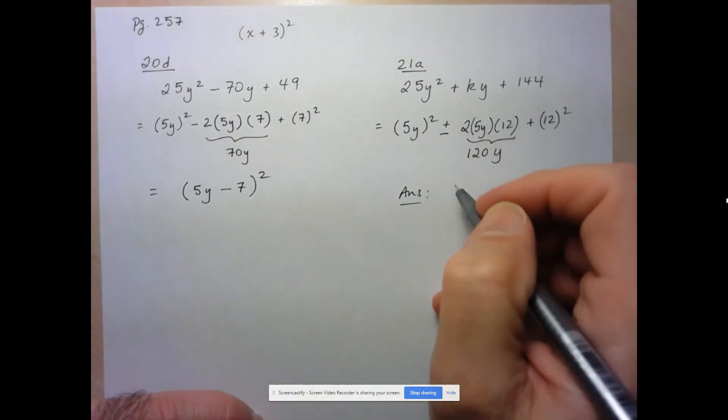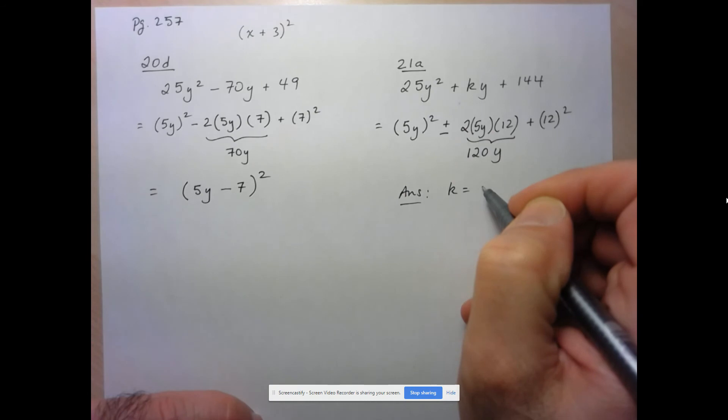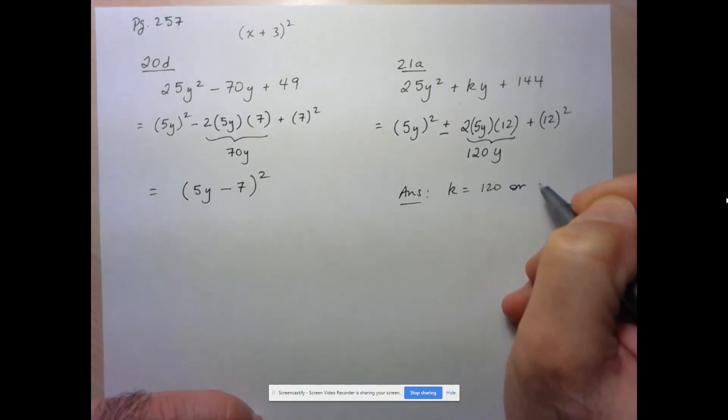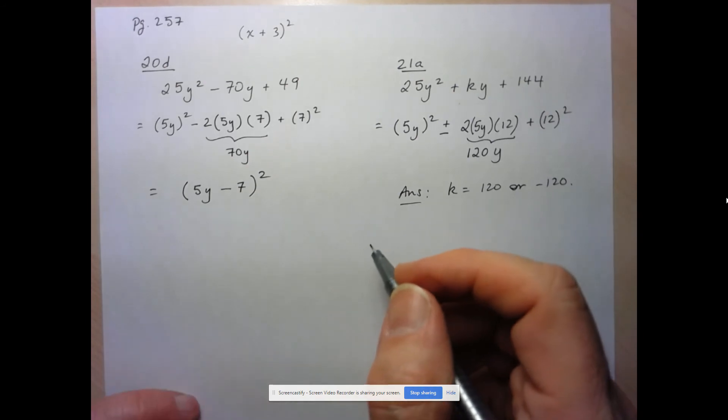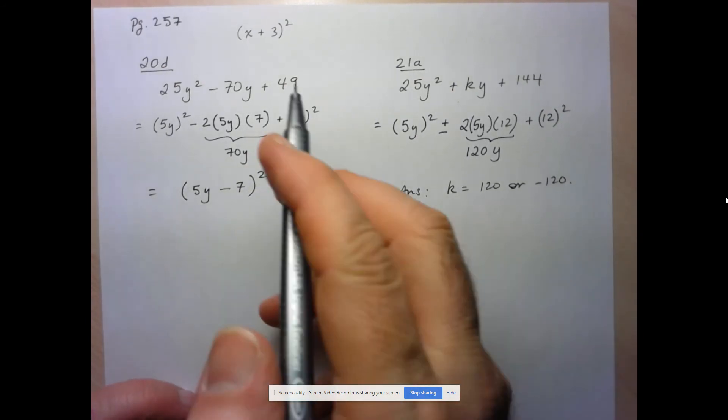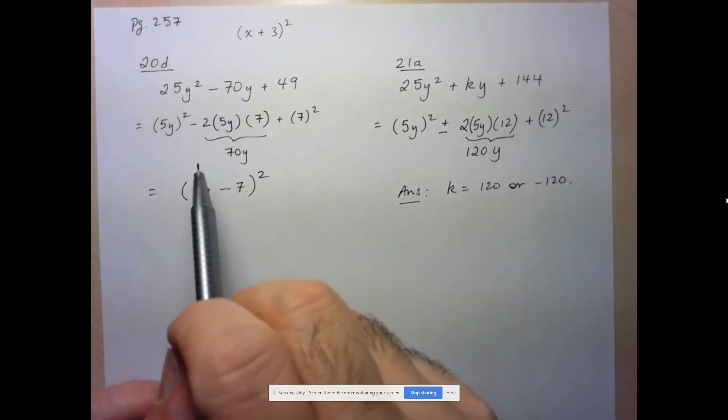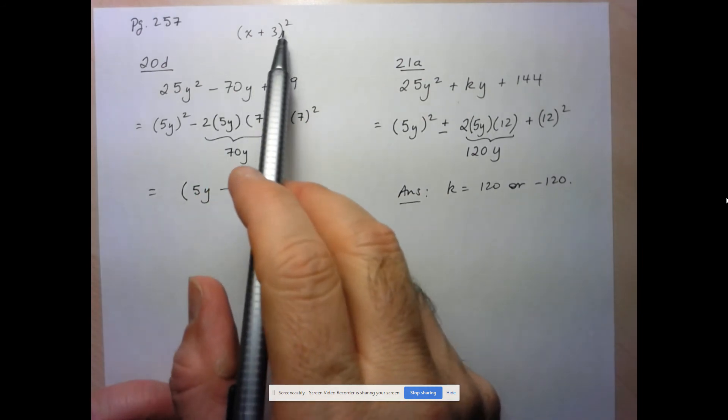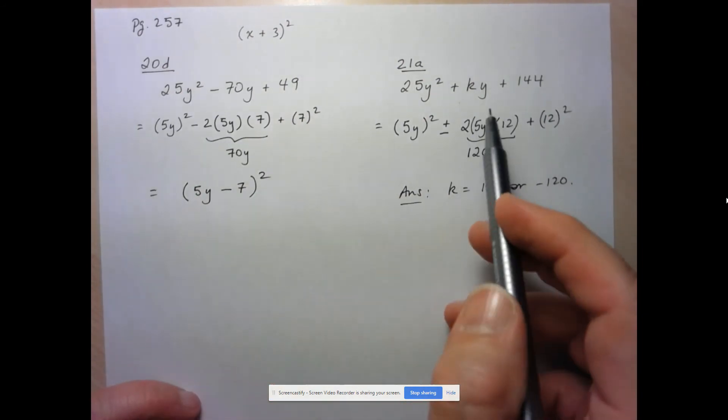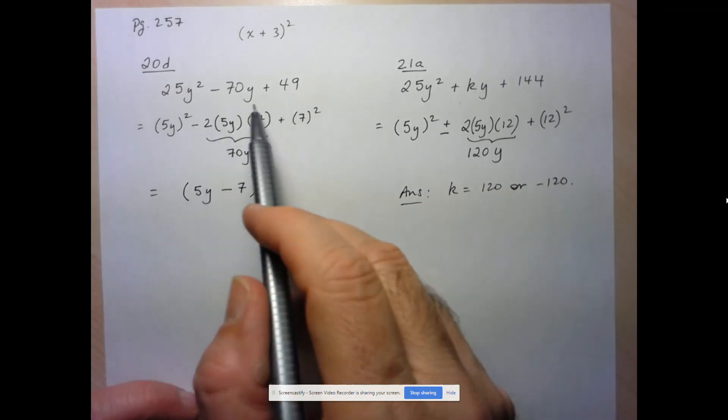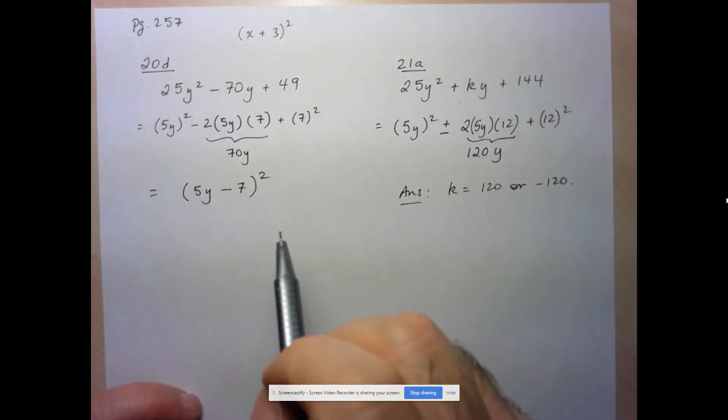There's actually two possible answers. K has to be equal to 120y or negative 120y. So now we're starting to see the advantage of remembering that trick for squaring a binomial so that you don't actually have to factor these expressions. You can recognize them as being perfect square trinomials. That's it for this one.